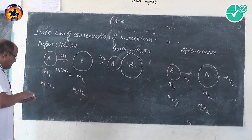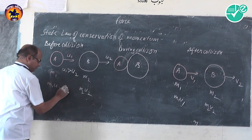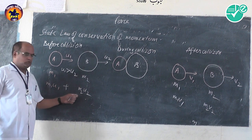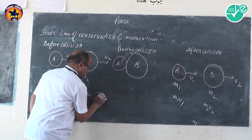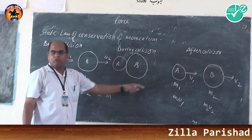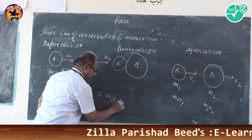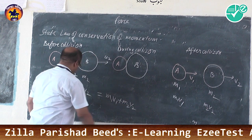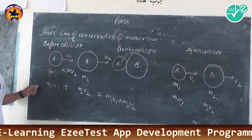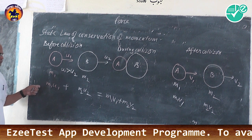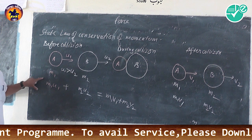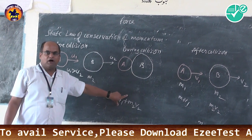According to the law of conservation of momentum, the total momentum before collision — M1 U1 plus M2 U2 — is equal to the total momentum after collision — M1 V1 plus M2 V2. This is the law of conservation of momentum: the total momentum of two colliding bodies is the same before collision as after collision.